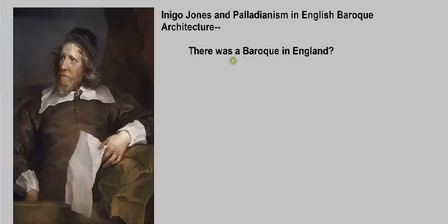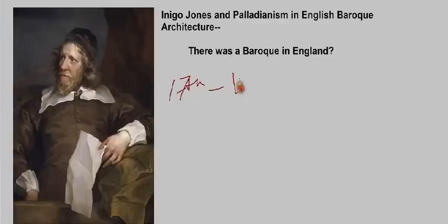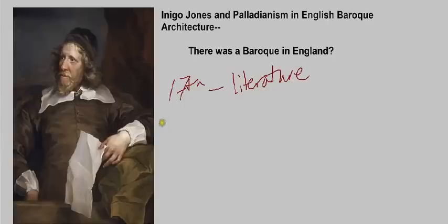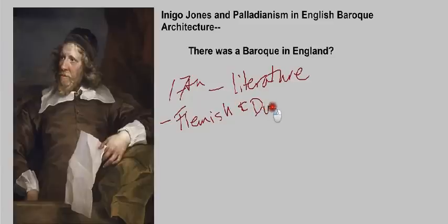I said 'there was a Baroque in England?' because you may wonder what was going on in England at the time. We're in the 17th century, and you may associate this period in England with literature. Certainly, literature was booming in England in the 17th century. We really haven't looked at any painting in England, and a lot of the Netherlandish paintings famous from this period are actually of the English. So we know that in England, Flemish and Dutch paintings were very much admired and patronized.